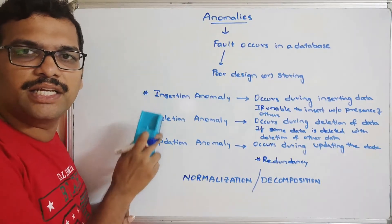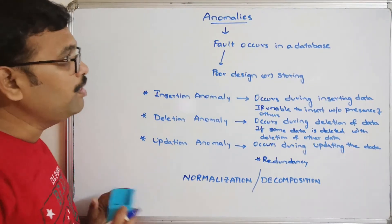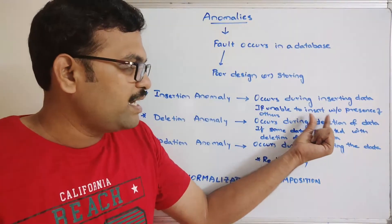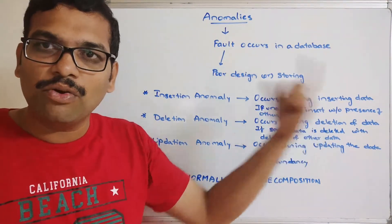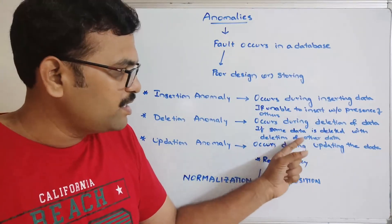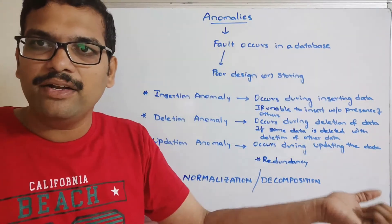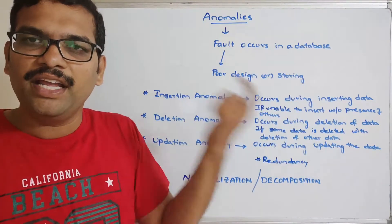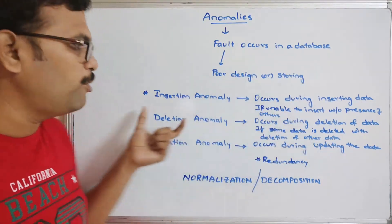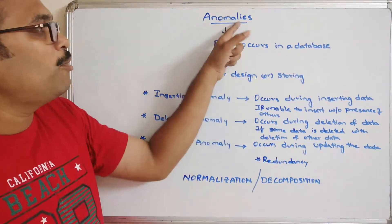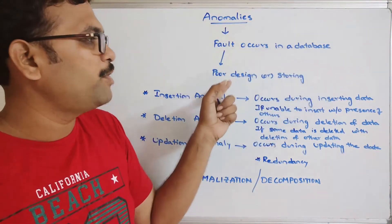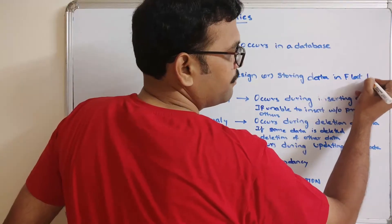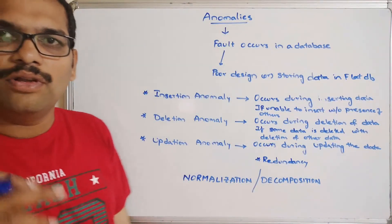To summarize: insertion anomaly means we can't insert data without the presence of other attributes; deletion anomaly means deleting some data may lead to deletion of other information; and updation anomaly arises because of redundancy. These anomalies occur because of poor design or storing data in a flat database. Let's take one example table.